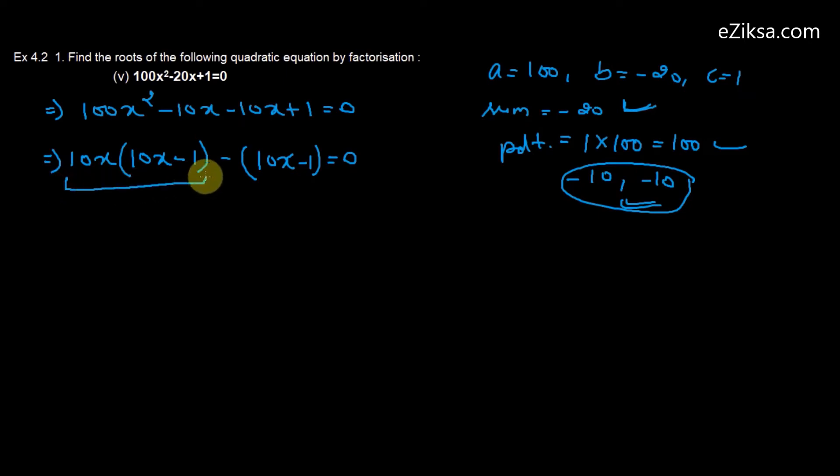We have (10x - 1) appearing in both terms. Taking (10x - 1) common: (10x - 1)(10x - 1) = 0, which gives us (10x - 1)² = 0.